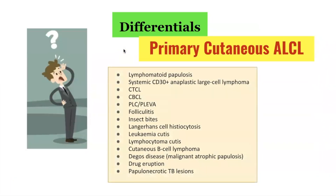In terms of differential diagnoses, there is a long list of dermatoses which can mimic cutaneous anaplastic large cell lymphoma, including other forms of cutaneous T-cell lymphoma, cutaneous B-cell lymphoma, pityriasis lichenoides chronica, folliculitis, insect bites, histiocytosis, Degos disease, drug eruptions, and papulonecrotic tuberculid lesions.